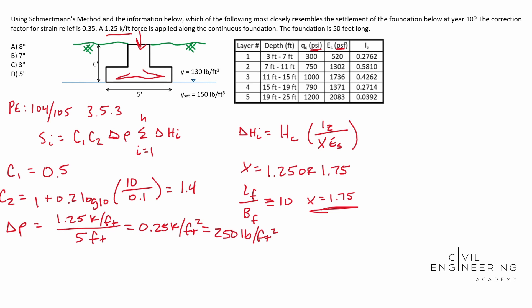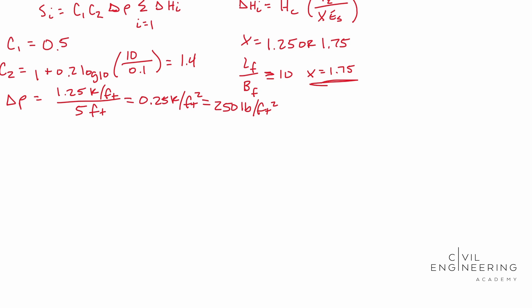So now that we have all of our unknowns, we have our C1, we have our C2, we have our Delta P. Now we need to add all of our H_i's up. We know what our H_i's are. We know what our H_c are. That's given to us in our table. Our I_z is given to us on our table. Our X is 1.75 and our E_s is also given to us in our table. So now we just need to add up our H_i's. Let's go ahead and solve for that first layer.